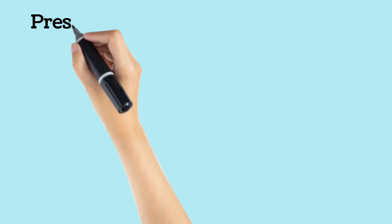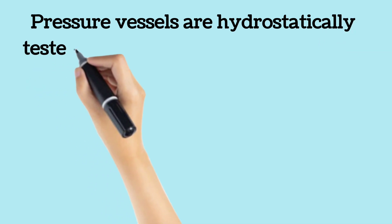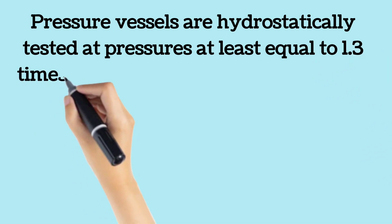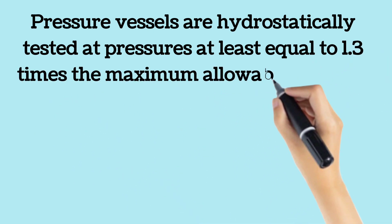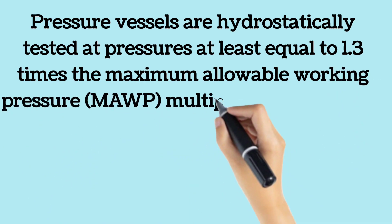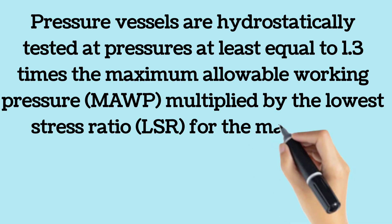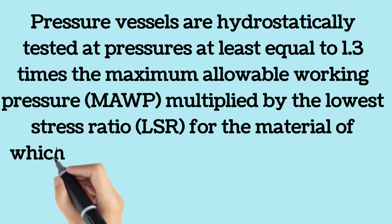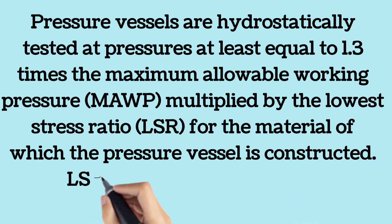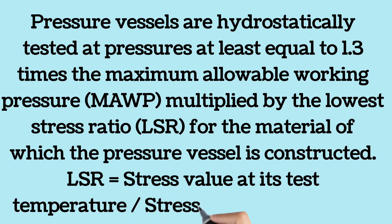Pressure vessels designed for internal pressure are subjected to a hydrostatic test pressure that, at every point in the vessel, is at least equal to 1.3 times the maximum allowable working pressure (MAWP) multiplied by the lowest stress ratio (LSR) for the material of which the pressure vessel is constructed. The LSR is the ratio of the stress value at the test temperature to the stress value at the design temperature.